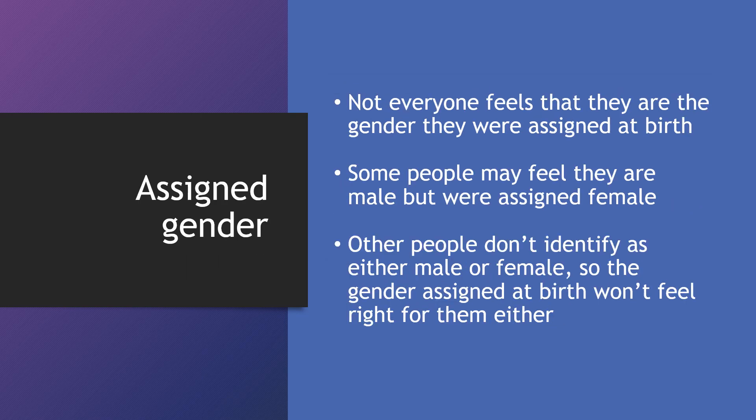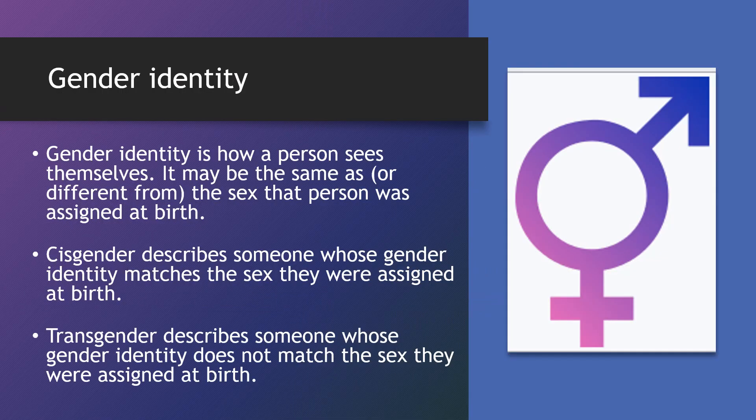Assigned gender — not everyone feels that they are the gender they were assigned at birth. Some people feel that they are male but were assigned female. Other people don't identify as either male or female, so the gender assigned at birth won't feel right for them either. This leads us to gender identity. Gender identity is how a person sees themself. It may be the same as or different from the sex that person was assigned at birth.